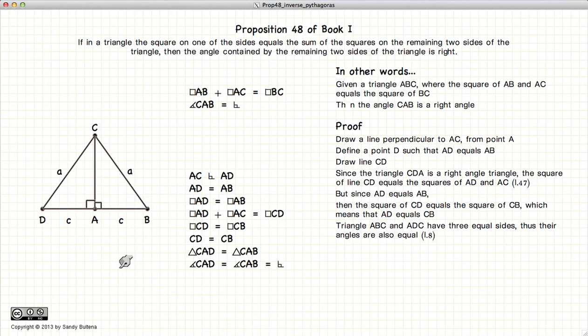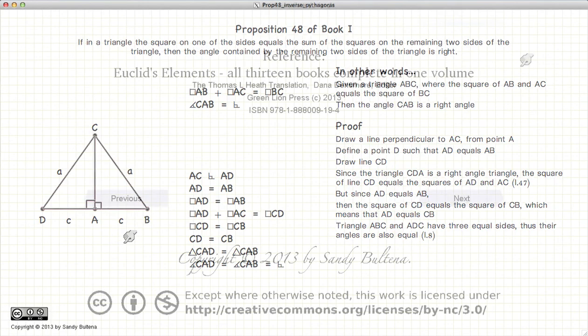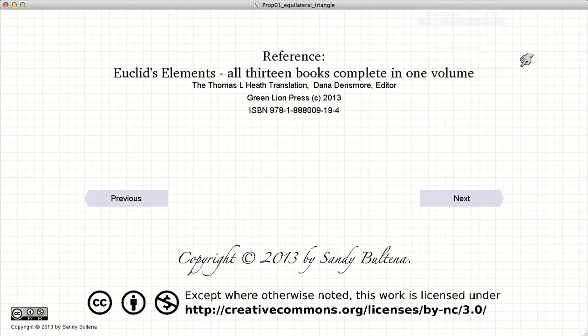And thus we have demonstrated that if you start with a triangle where A squared plus B squared equals C squared, that triangle is a right angle triangle. And that concludes this video presentation. To see the next presentation, just click the Next button.